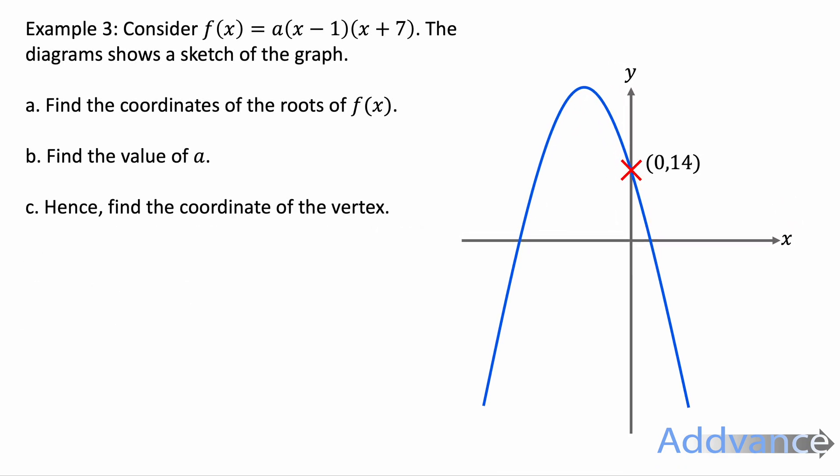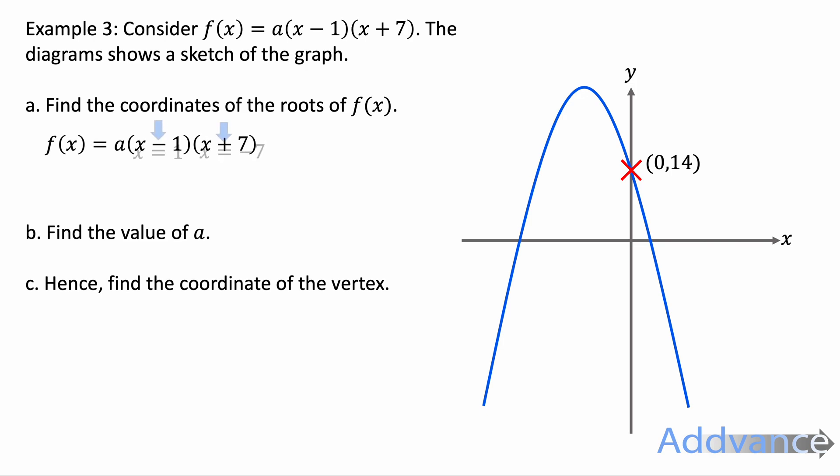In example three, f(x) = a(x − 1)(x + 7). The diagram shows a sketch of the graph. Find the coordinates of the roots of f(x). This is super simple — we look at the brackets, and the opposite of the numbers inside gives us x equals 1 and x equals minus 7. Therefore the roots are (minus 7, 0) and (1, 0), which are the x-intercepts of this quadratic.